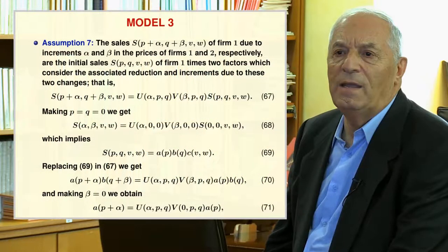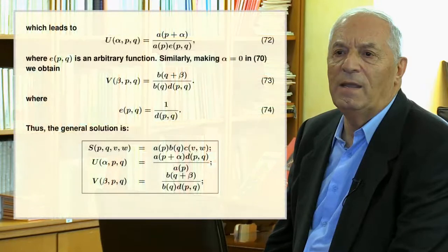Model 3 uses Assumption 7: the sales S of firm 1 due to increments alpha and beta in the prices of firms 1 and 2 respectively are the initial sales times two factors considering the associated reduction and increments due to these two changes, that is, functional equation 67 holds. Making P equal to Q equal to 0 gives 68, implying 69. Replacing 69 in 67 gives 70, and making beta equal to 0 gives 71, leading to 72 where E is an arbitrary function. Similarly, making alpha equal to 0 in 70 gives 73, where E must satisfy 74. The general solution is shown at the bottom of the slide.